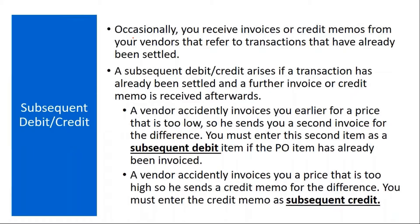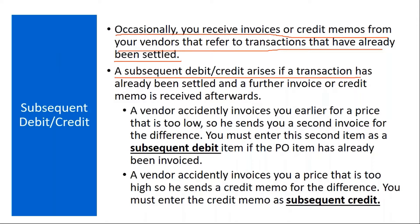First we'll start with entering subsequent debits and credits. Basically, what happens is occasionally you receive invoices or credit memos from your vendors that refer to transactions that have already been settled. A subsequent debit or credit arises if a transaction has already been settled and a further invoice or credit memo is received afterwards. So subsequent debit and credit normally happens after the initial invoice is already settled.